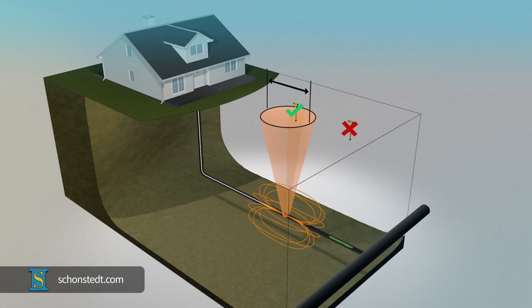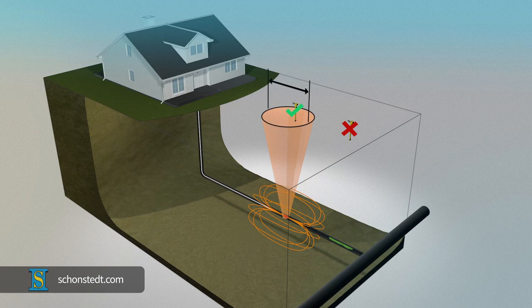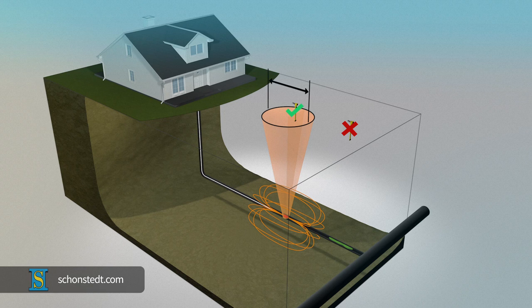As you can see, if the sonde is deeper, then the diameter of the proximity area on the surface is smaller.